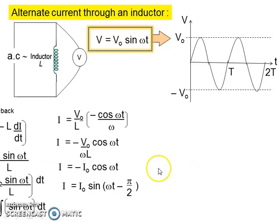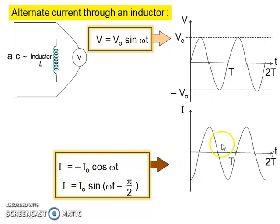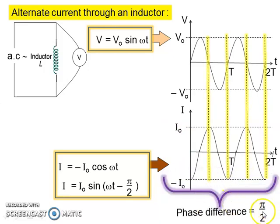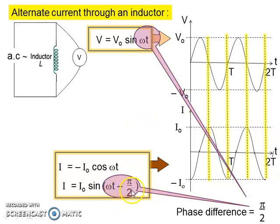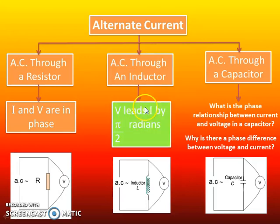Because of the negative, the shape starts from the negative I0. Their phase difference is pi per 2. Comparing the phase: V has phase omega T, whereas I has phase omega T minus pi per 2, so their phase difference is pi per 2. Because of the negative, that means V is leading I — V is at the origin at time 0, and I is at negative I0. So that is why V leads I. We've done AC through an inductor — we get V leads I by pi per 2 radians.